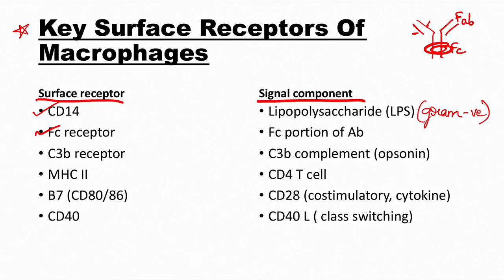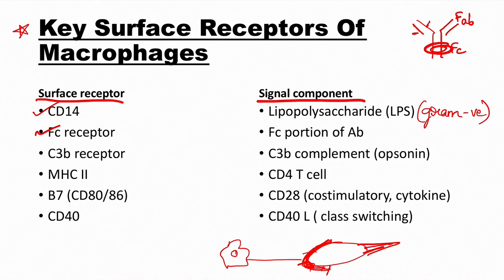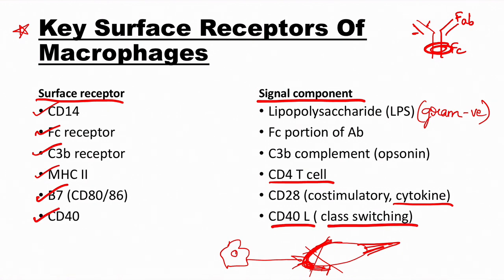Opsonization is the process by which a pathogen is marked for ingestion and destruction by phagocytes. For example, C3b will coat or paint the bacteria, and a nearby macrophage will detect and attack it. Additionally, MHC-II receptor binds CD4 T cells; B7 receptor binds CD28, leading to cytokine production; and CD40 binds CD40 ligand, leading to class switching of antibodies — meaning a switch from IgM to IgA, IgG, or other isotypes.